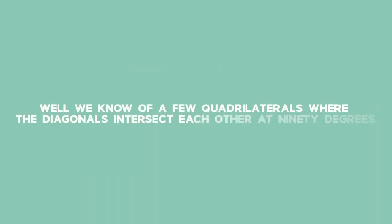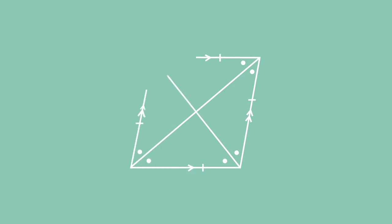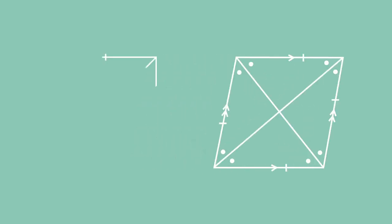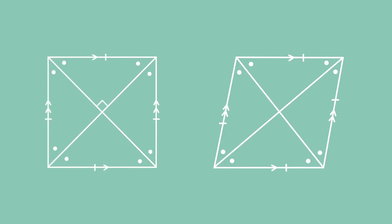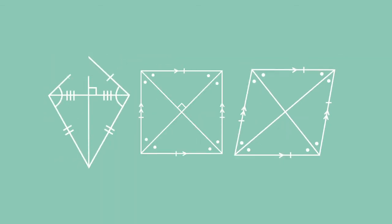Well, we know of a few quadrilaterals where the diagonals intersect each other at 90 degrees. We know that in a rhombus, the diagonals intersect perpendicularly. In a square, the diagonals also intersect perpendicularly, and in a kite.